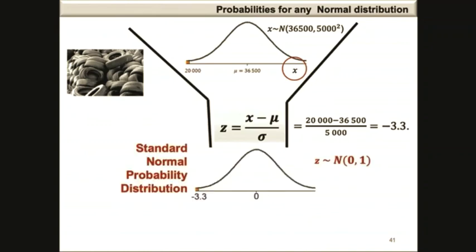Therefore, on the graph the z value is minus 3.3 and the area of interest is to the left of minus 3.3, keeping in mind that z is normally distributed with a mean of 0 and a variance of 1.